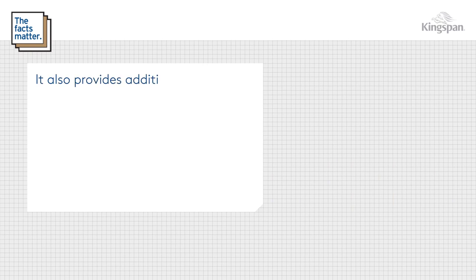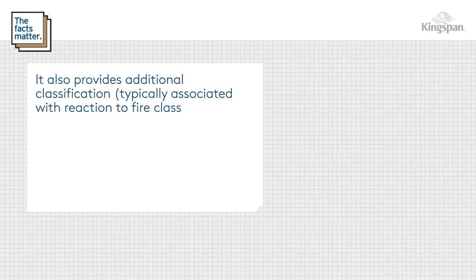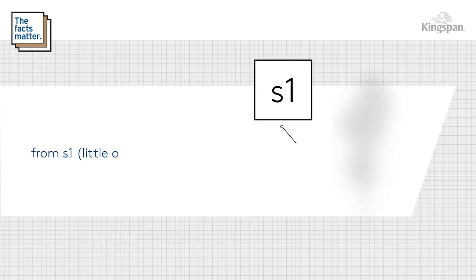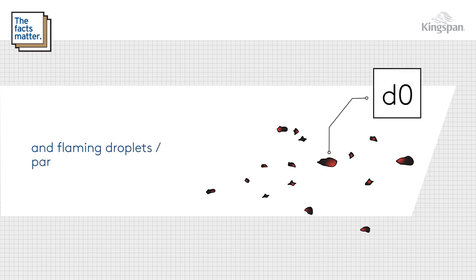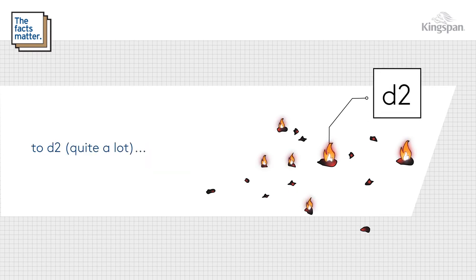The Euroclass system also provides additional classification, typically associated with reaction to fire classes A2 through to D, for smoke production — from S1, little or no smoke, to S3, substantial smoke — and flaming droplets and particles, from D0, none, to D2, quite a lot.